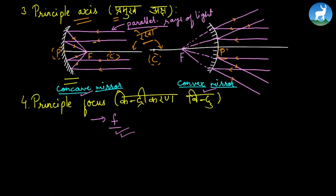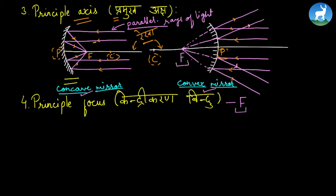Light reflects off this mirror — in a convex mirror it reflects outward, and in a concave mirror the reflected rays converge at a point. This converging point is called the focal point, and this is the principal focus.